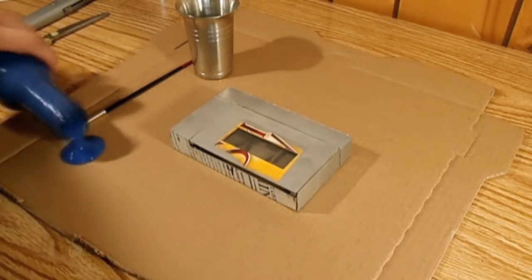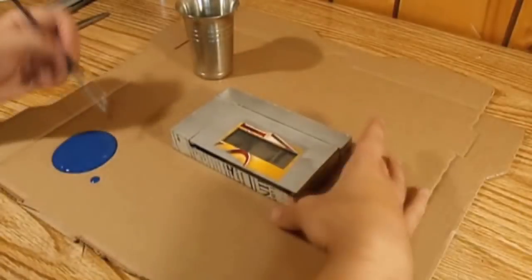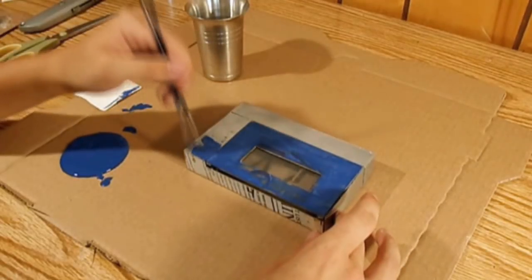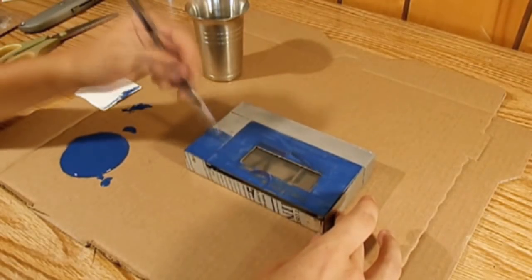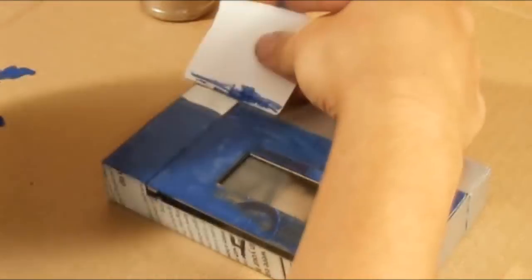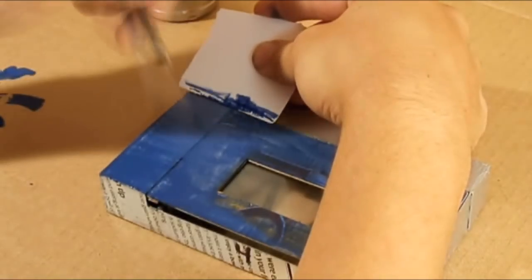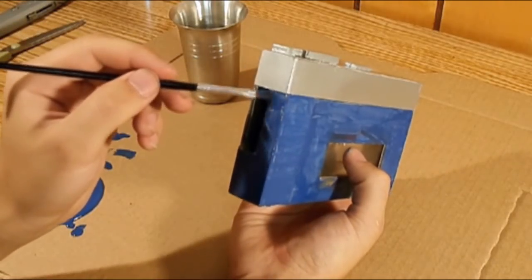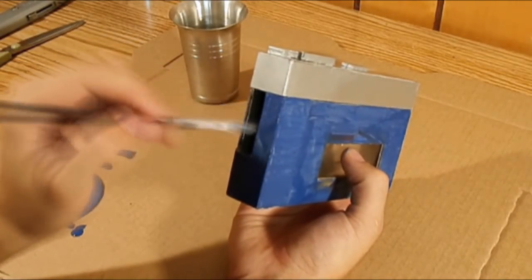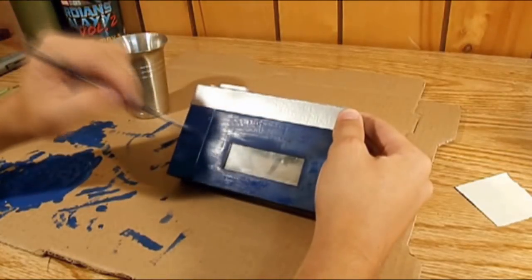Then afterwards, I painted the Walkman blue, while leaving parts of the front, top, back, and sides of it silver. And I gave it about 3 coats of paint.